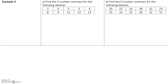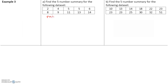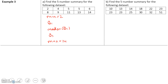Here's an example: find the five-number summary for the following data set. The five-number summary consists of the minimum, Q1, the median (Q2), Q3, and the maximum. The minimum value is easy — the smallest value is 2, so that's our minimum. The maximum value is the largest value, which is 14.